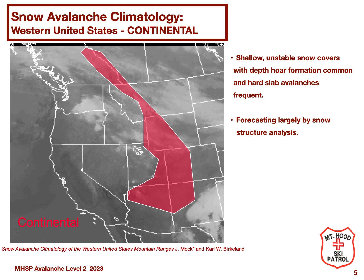The continental region includes the mountain ranges of Montana, Wyoming, and Colorado. The predominant weather influence in this region is very cold, dry Arctic air coming from Alaska and the Western Plains of Canada. This region receives much less snow than the maritime region, so the snowpack is shallower and the snow tends to be dry and susceptible to persistent weak layers and large slab avalanches. The primary forecasting tool in this region is snowpack structure analysis.